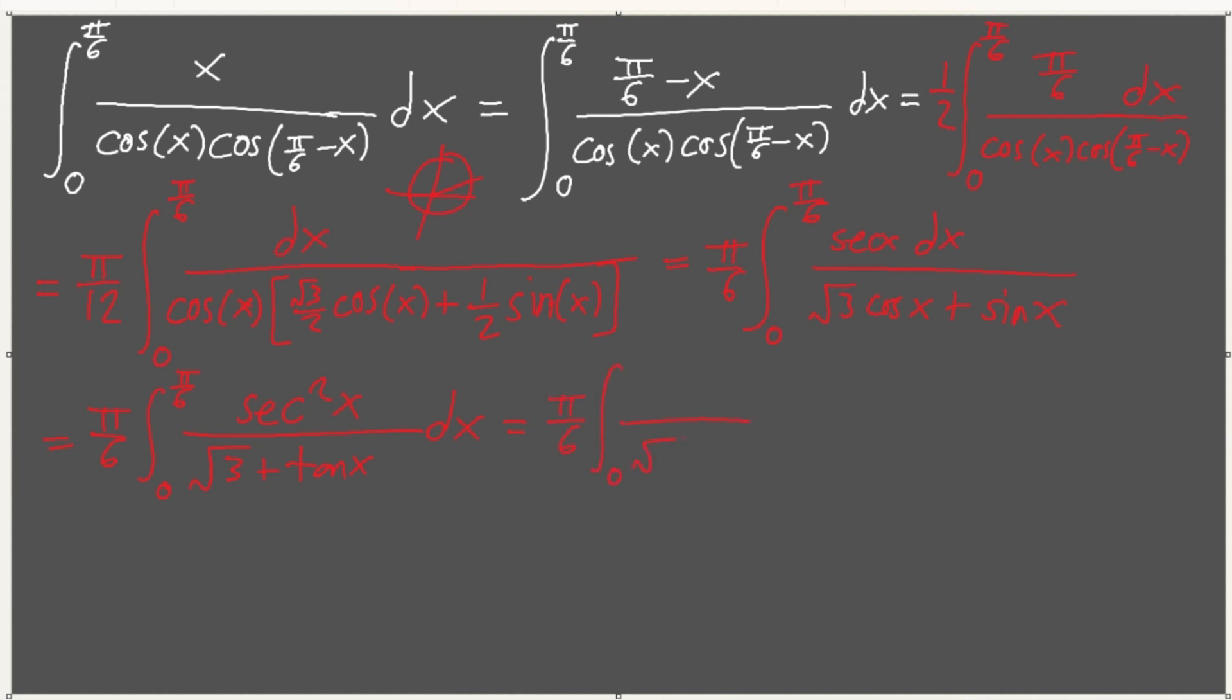Right. 0, root 3 plus u, and then du, let's see, tangent of pi over 6, what is that? That's like 1 over root 3, right? And we can easily see that this is just simply ln of u plus root 3, right? Plug in 0, plug in whatever this is. Okay. And now we have our answer.